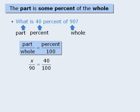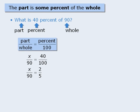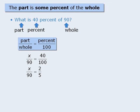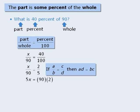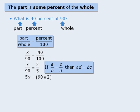At this point, we can solve this equation by first simplifying the right-hand side to get 2 fifths. From here, we can apply the rule and cross-multiply. Then we simplify the right-hand side and divide both sides by 5 to get x equals 36. This means 36 is 40% of 90.